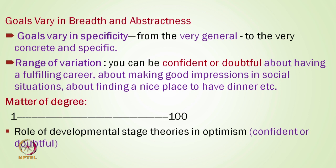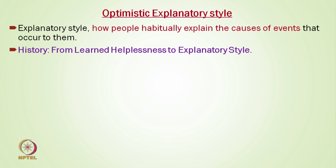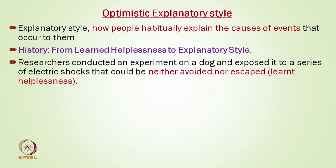That is why there is a significant role of developmental stage theories. I will discuss Erik Erikson's theory in the resilience chapter and show how it is relevant for hope as well as optimism. The next point related to optimism is optimistic explanatory style — how people habitually explain the cause of events that occur to them. These explanations decide whether you are an optimist or a pessimist person.